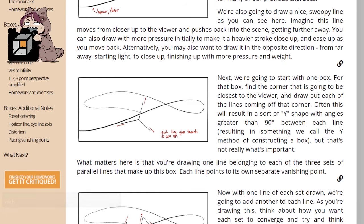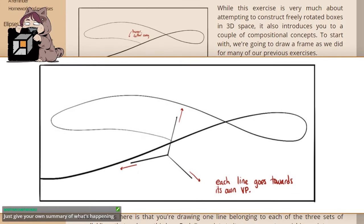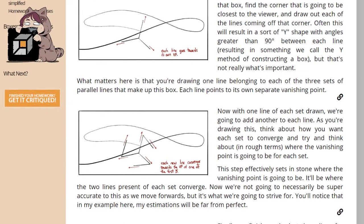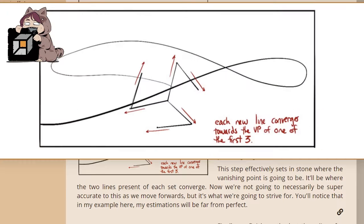All right, we're going to start with one box. For that box, find the corner that is going to be closest to the viewer and draw out each of the lines coming off of that corner. So draw the corner that's closest to the viewer, and then you want three lines from that corner going off towards their own vanishing point.